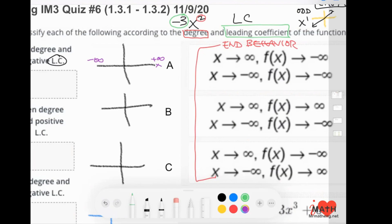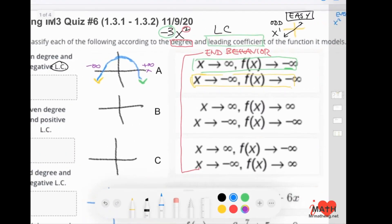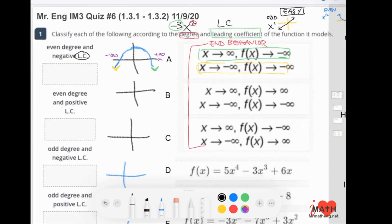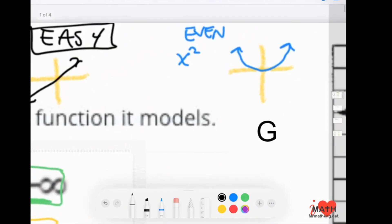As x goes towards the right, the graph goes down. So there's my green arrow. As x goes towards negative infinity or the left, the graph also goes down. So my graph is going to look something like this.